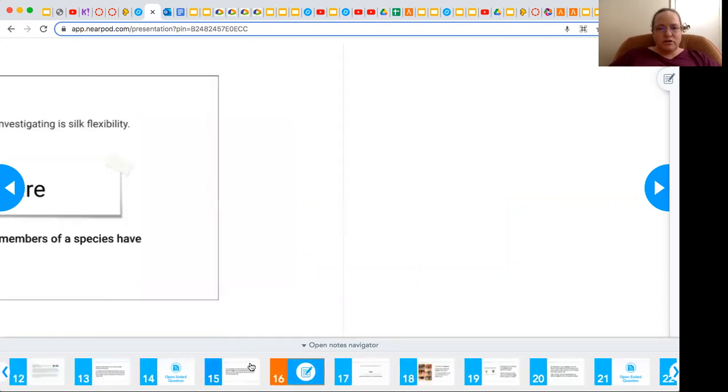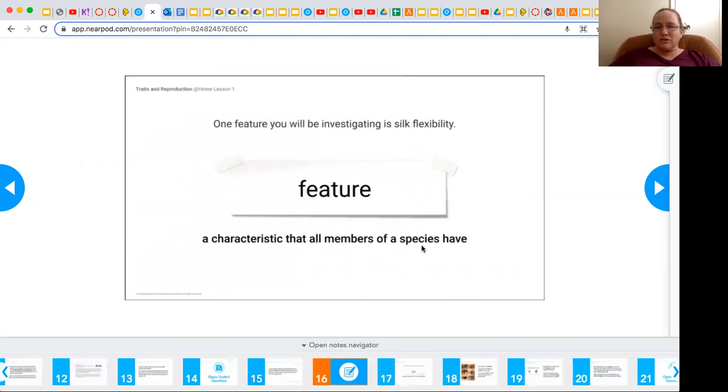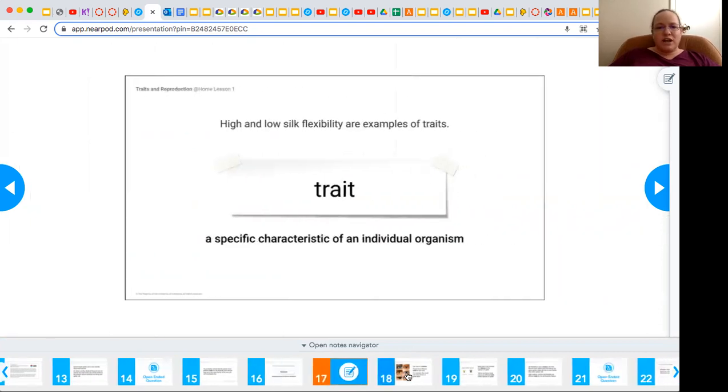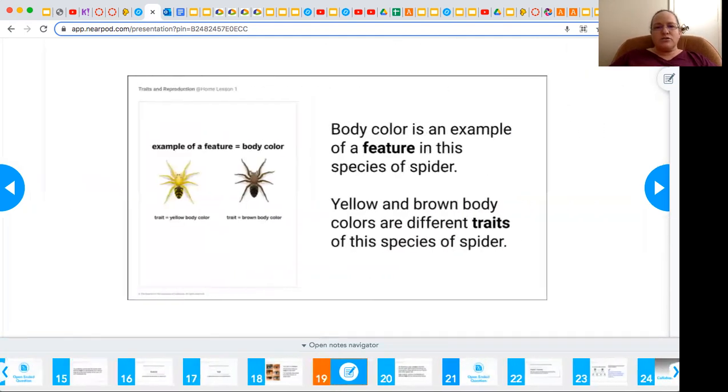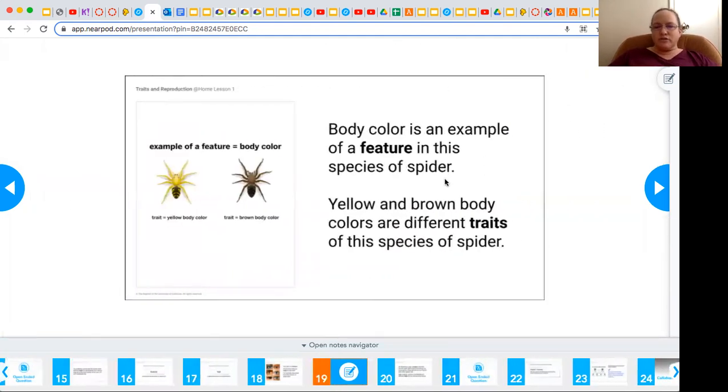So take time to look at the vocabulary words. It's a characteristic that all members of the species have. So every human has eye color, but the trait is the specific characteristic of an individual organism. So I have green eyes. So that's my specific characteristic for that feature. Then you'll kind of go through and look at some other examples of trait and feature to make sure that you understand.